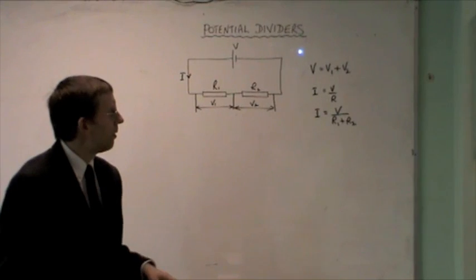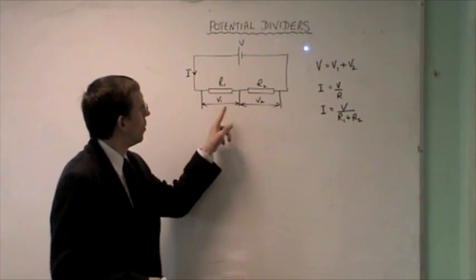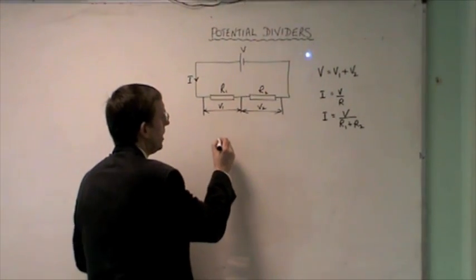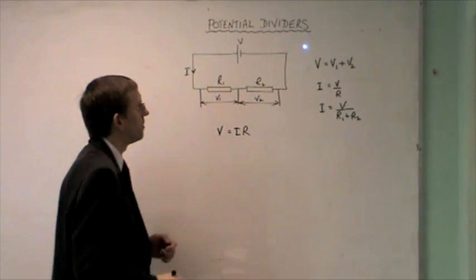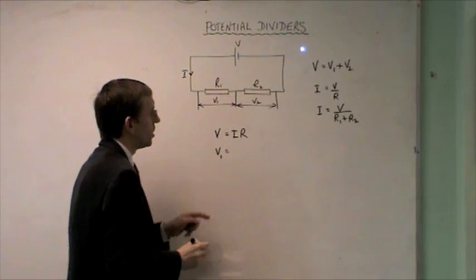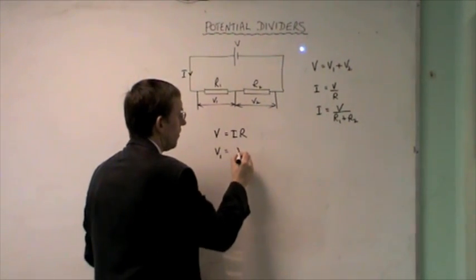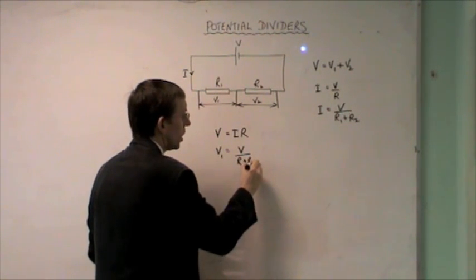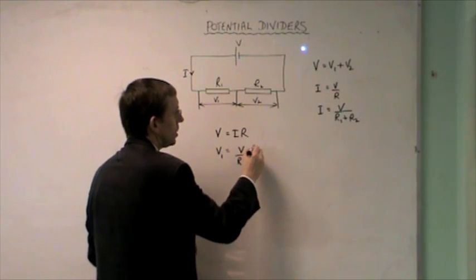Now that I know the current flowing in the circuit, I can work out what V1 is and what V2 is using V equals I times R. So V1 will be equal to I, which is this expression here, which is V over R1 plus R2 times the resistance, which is R1.